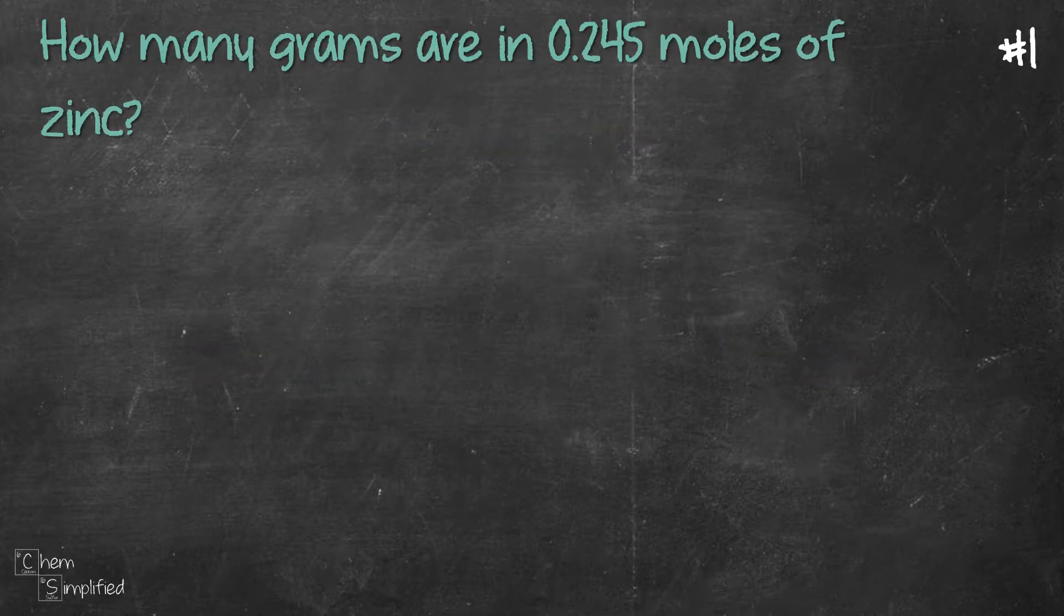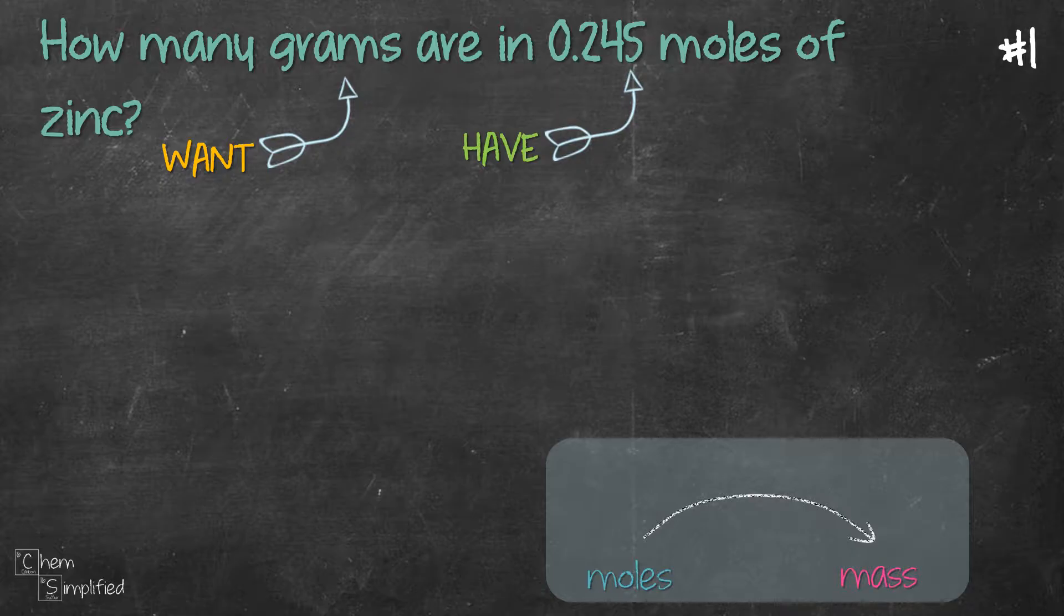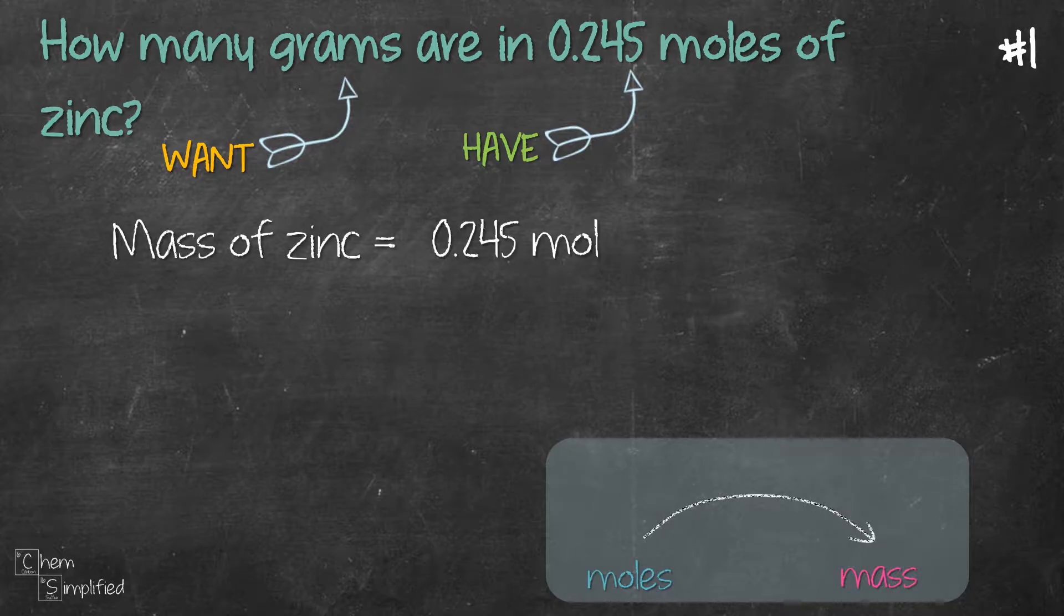Let's look at our first question. It gives us 0.245 moles and it's asking us to find the mass of zinc. We're going to use dimensional analysis method to solve this. So we write out what we need to find, which is the mass of zinc, equals what the question gives, which is 0.245 moles, and then we place a multiply sign and draw a line across.